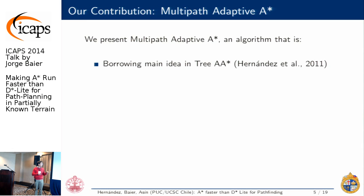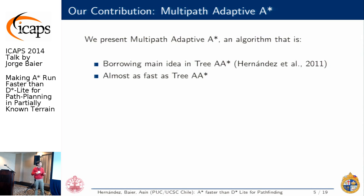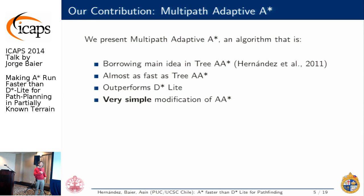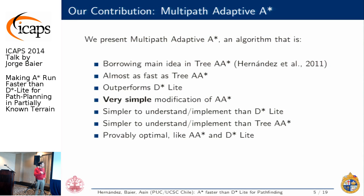It turns out we can, with a very simple modification of A* called multipath adaptive A*. The contribution is small because it borrows an idea from an existing algorithm. It's not proposing something entirely new, and it's not always faster — but it outperforms D* Lite just as tree adaptive A* does, while being a very simple modification of A*, simpler to understand and implement than D* Lite, and probably optimal.